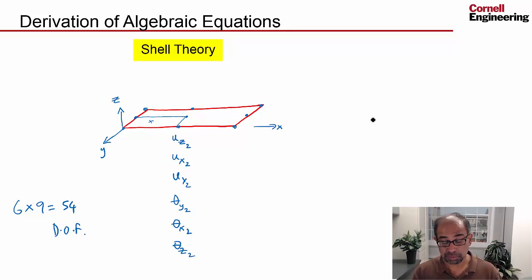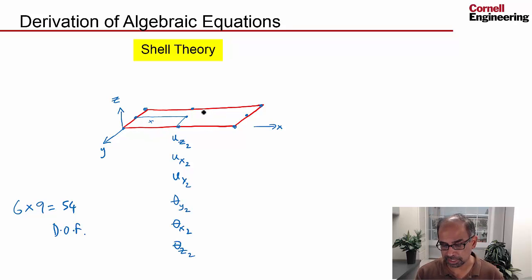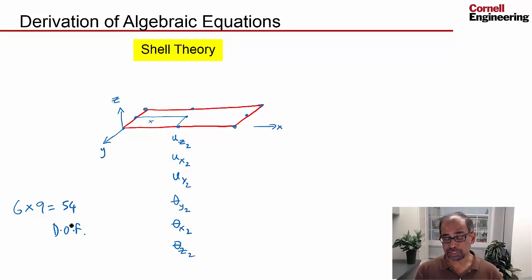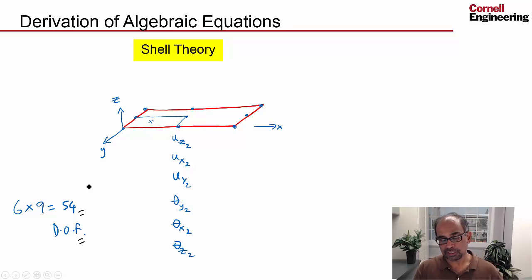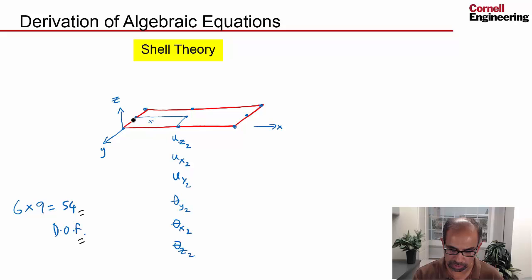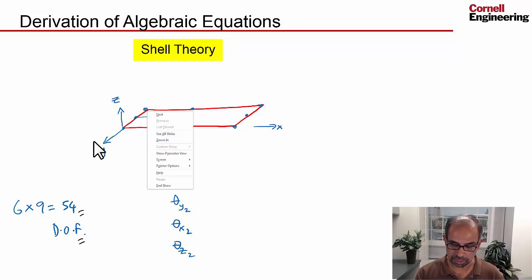We're looking at a very simplified scenario here compared to the wind turbine blade case, but understanding this will help us understand what we do in ANSYS for the wind turbine blade case. We've reduced the problem to finding 54 degrees of freedom. First, we can use boundary conditions — for instance, a fixed boundary, which means all degrees of freedom at that boundary are set to zero.